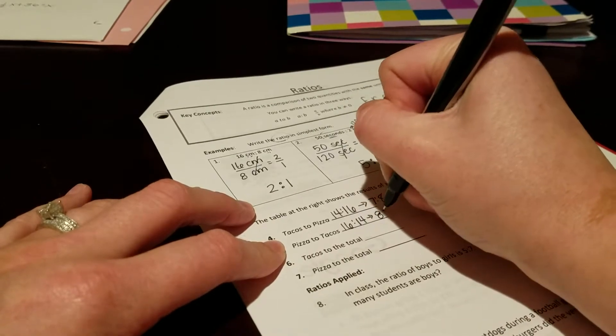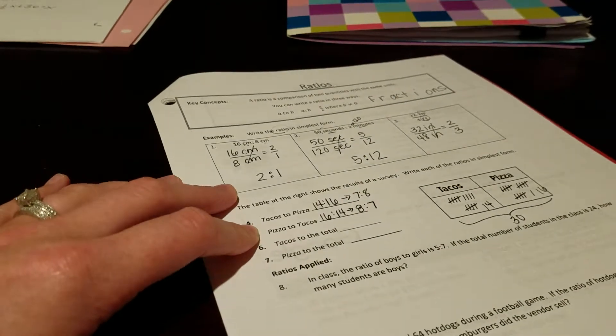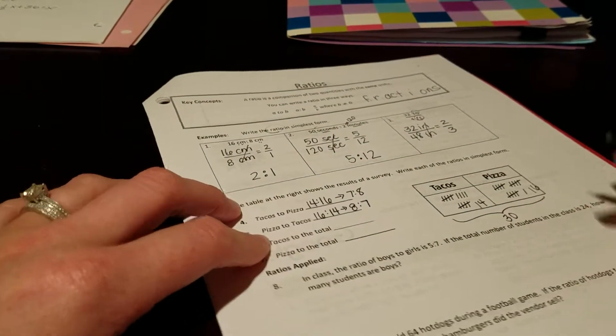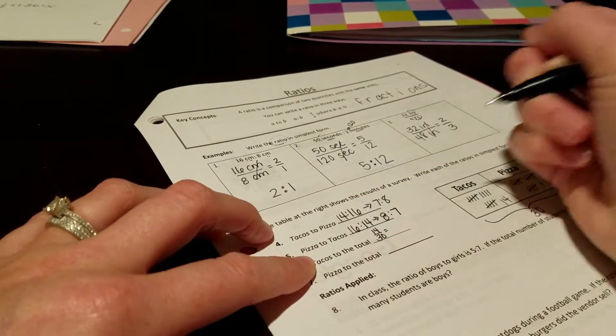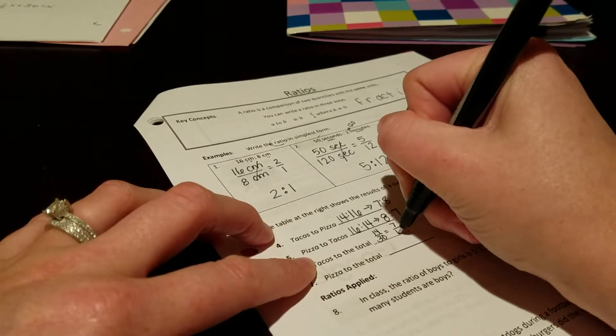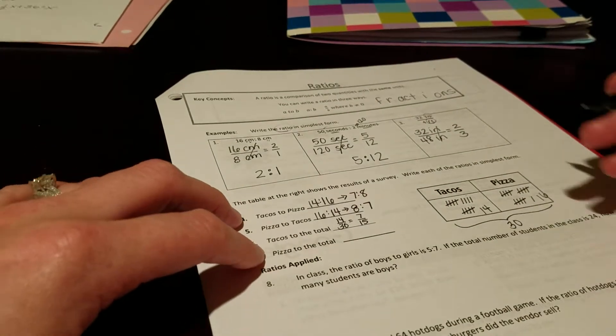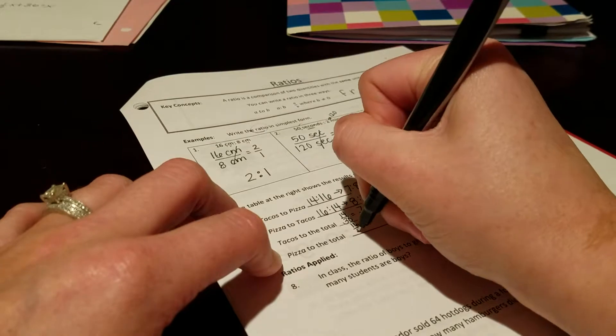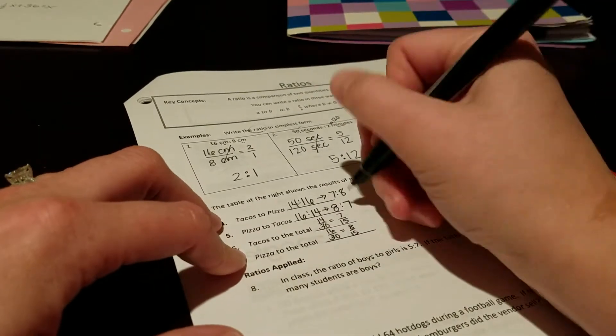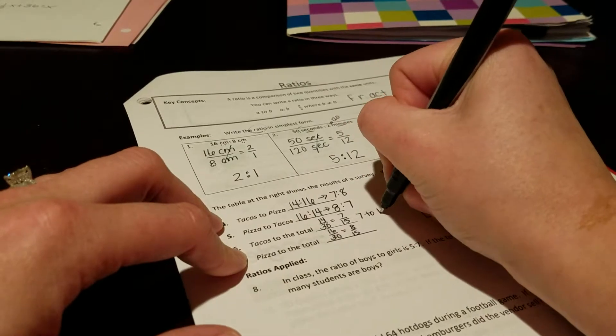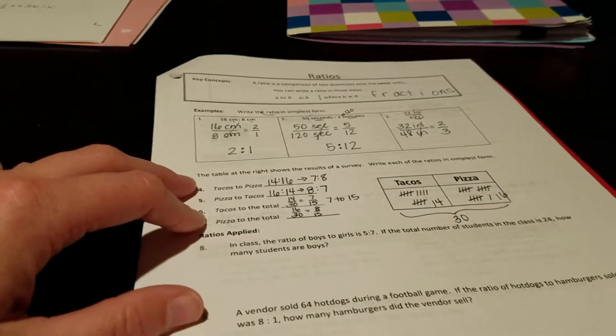Tacos to the total, 14 to 30. We can also write this as a fraction, if that makes you more comfortable. Which will give us 7 over 15. And pizza to the total, which would be 16 over 30, which will give us 8 over 15. We could also write these out in words, 7 to 15.